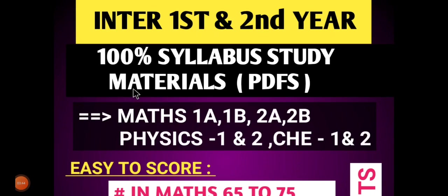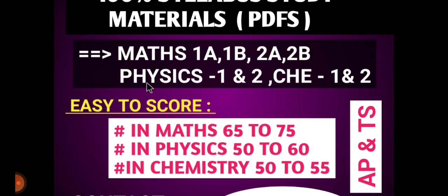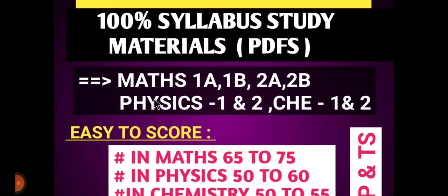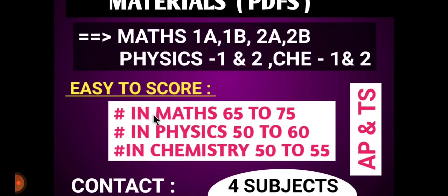Students, one minute — intermediate first year and second year 100% materials are prepared. Maths 1A, 1B, 2A, 2B. Physics first year and second year. Chemistry first year and second year. First year 4 subjects and second year 4 subjects materials are prepared in PDFs. Maths 65 to 75 scores, Physics 50 to 60 scores, Chemistry 50 to 55 scores.